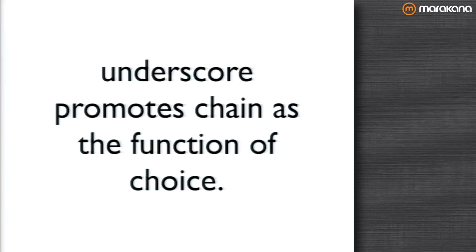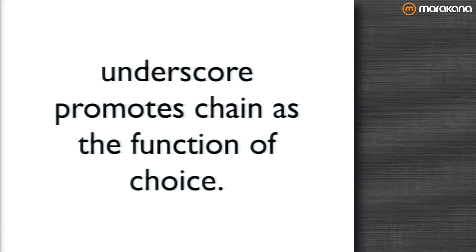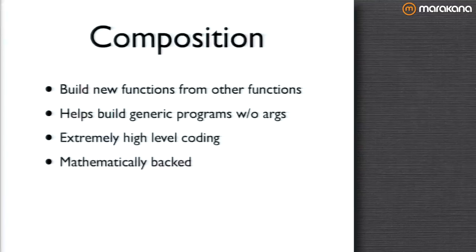Underscore promotes chain as the function of choice, and a lot of people tend to use that over composition, which is a shame because composition has a whole math backing it and is pretty powerful. Composition: you build new functions from other ones, you can have generic programs, it's really high-level coding, totally declarative, not really specifying sequence. And you've got the math backing it.